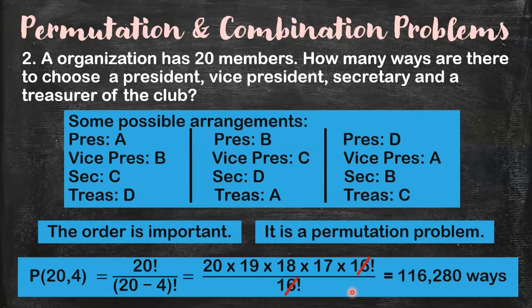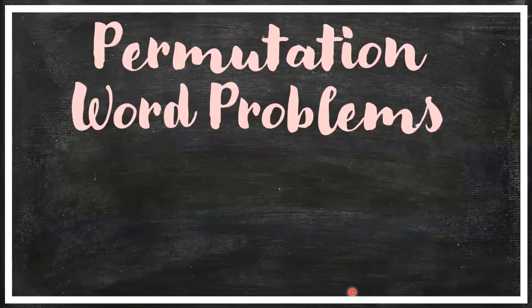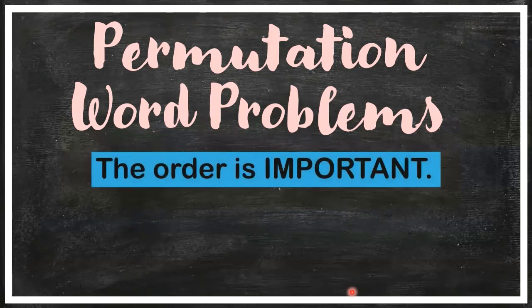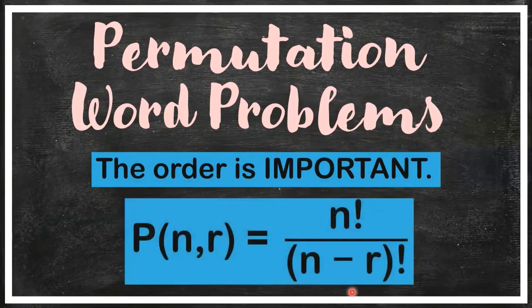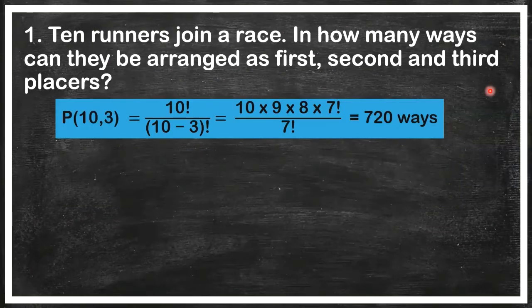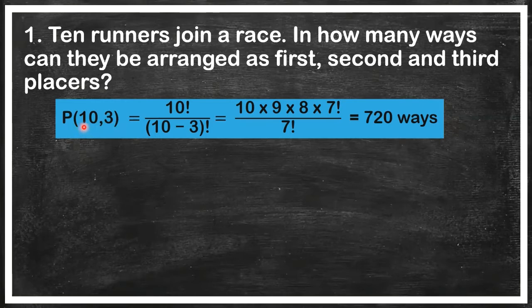Now let me give you more permutation and combination problems — permutation word problems first. Remember, if it's a permutation, the order is important; use the permutation formula. First problem: 10 runners join a race and we need first, second, and third place — positions can't be swapped. So we use the permutation formula where N = 10 and R = 3. The 7 factorial cancels out.